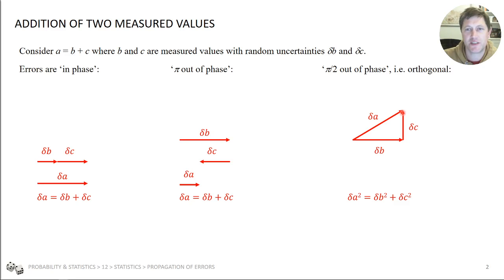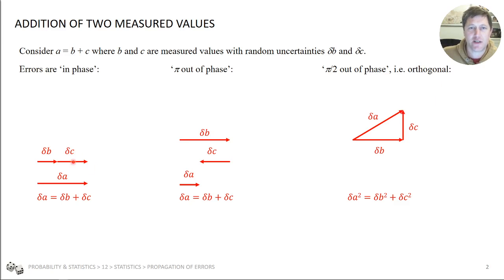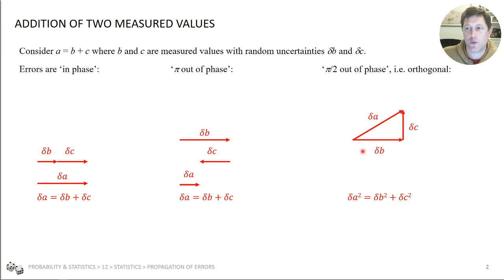Importantly, the errors in B and C are independent of each other. That's why we take this middle case — they're not likely to be acting in the same direction all the time, nor in opposite directions all the time. They're likely to be completely random, so on average they are orthogonal from each other.